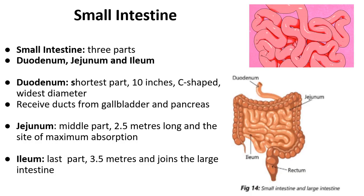The next part of the human digestive system is the small intestine. As we had discussed the earlier parts of the human digestive system, we discussed the structure and function of the same. In the same way, we are going to discuss the structure and function of the next part, that is the small intestine.